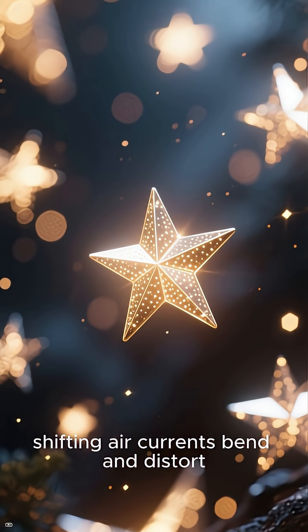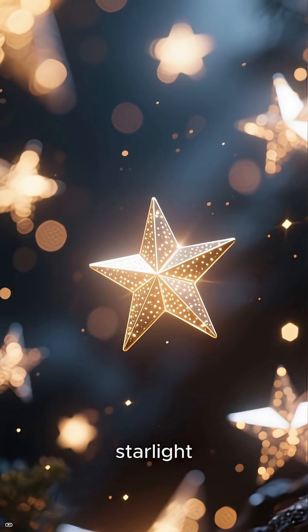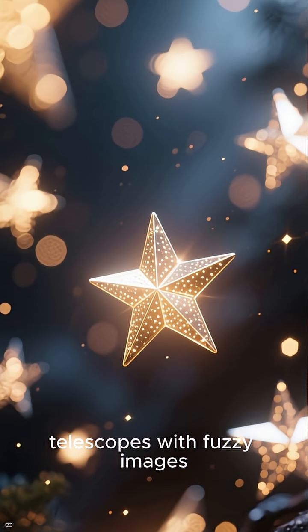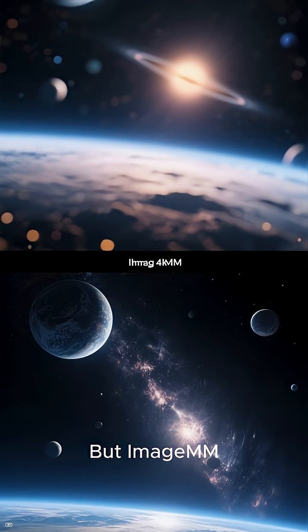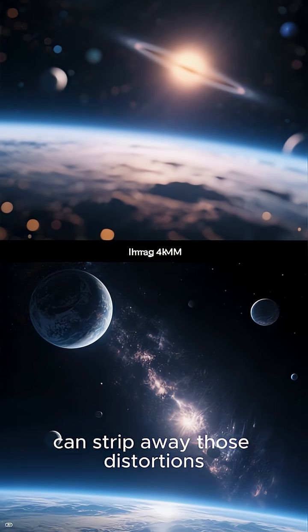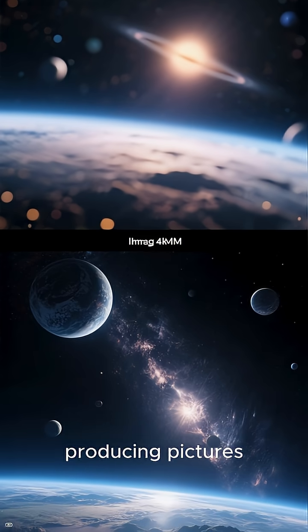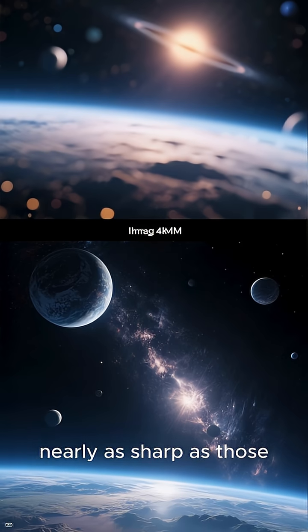Normally, shifting air currents bend and distort starlight, leaving even the best ground-based telescopes with fuzzy images. But ImageMM can strip away those distortions, producing pictures nearly as sharp as those taken in space.